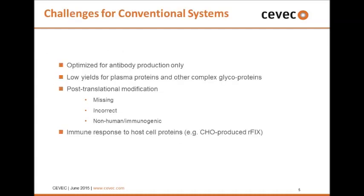Looking at the conventional systems out there, they are very often optimized for antibody production. CHO cells are a success story for antibodies, but when it comes to more complex proteins, you very often see low yields for plasma proteins — coagulation factors and other difficult-to-produce molecules. The post-translational modifications can also be missing or incorrect. And if these are Chinese hamster cells, the modifications can be non-human and immunogenic to patients.